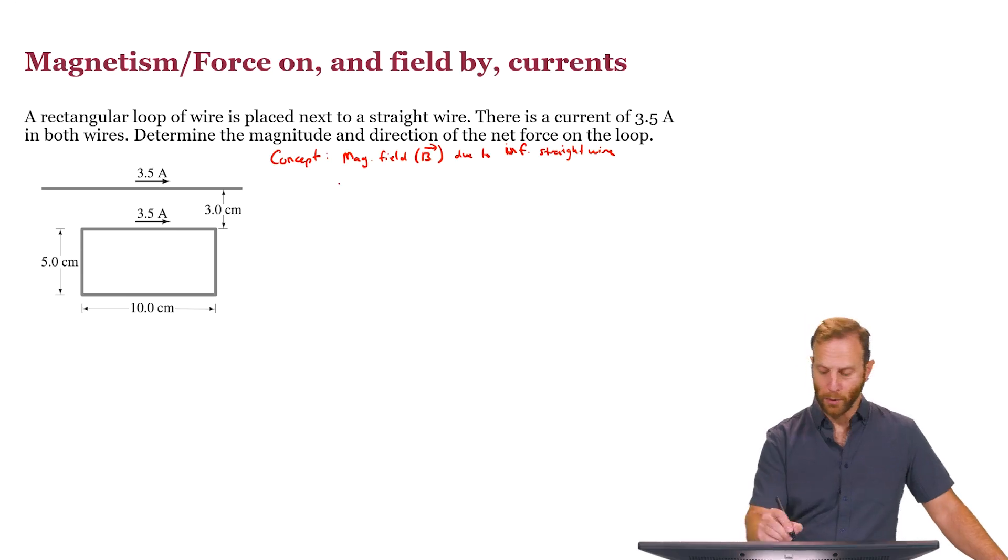We also have magnetic forces. So we have to consider magnetic force, which we'll call F with a subscript B, you may see it with a subscript M, on a current, a wire containing current.